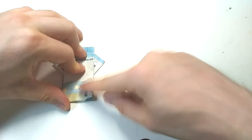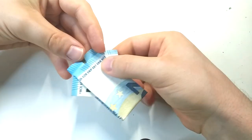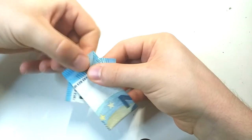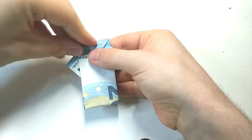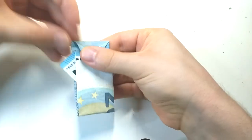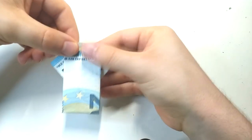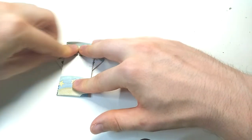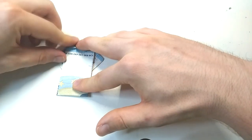We crease again, and then we crease at an angle to make the collar of the shirt. Make it nice and neat and flat.